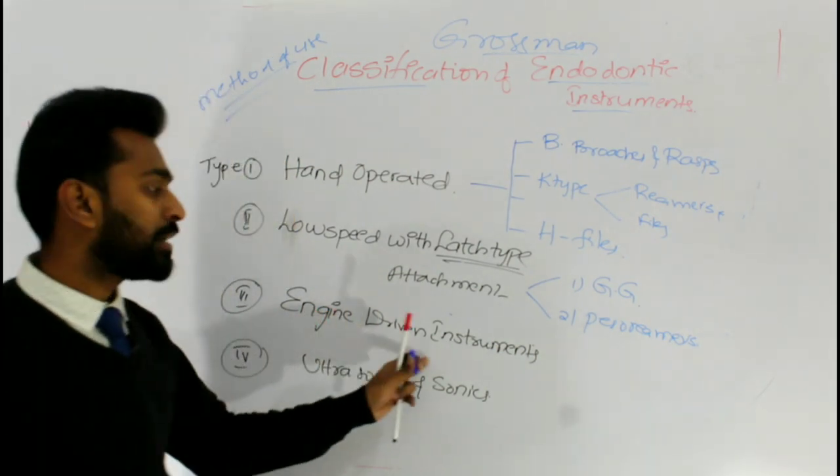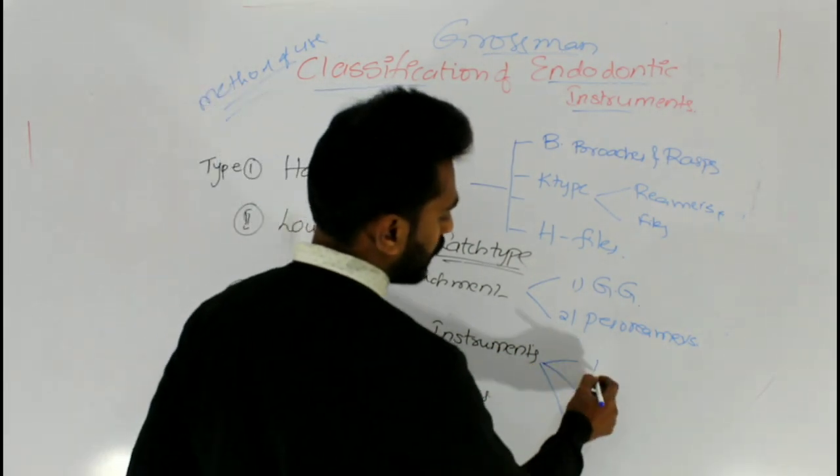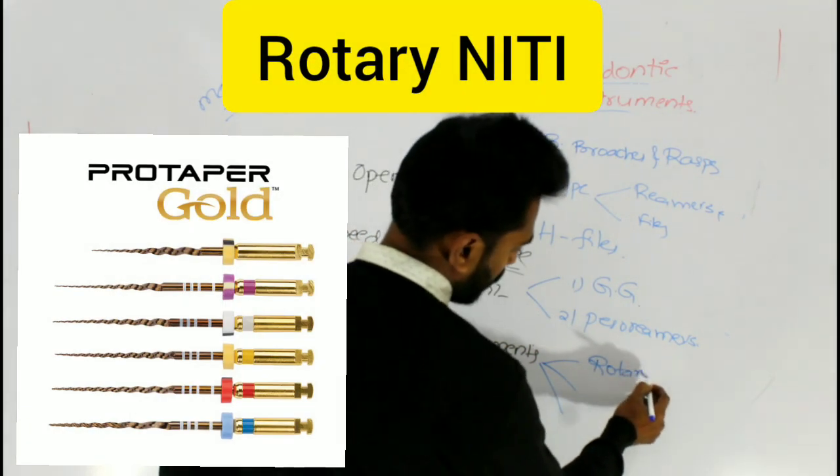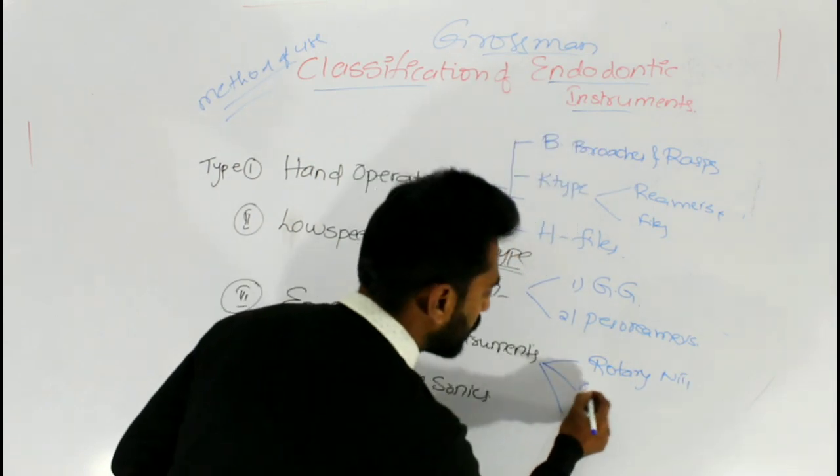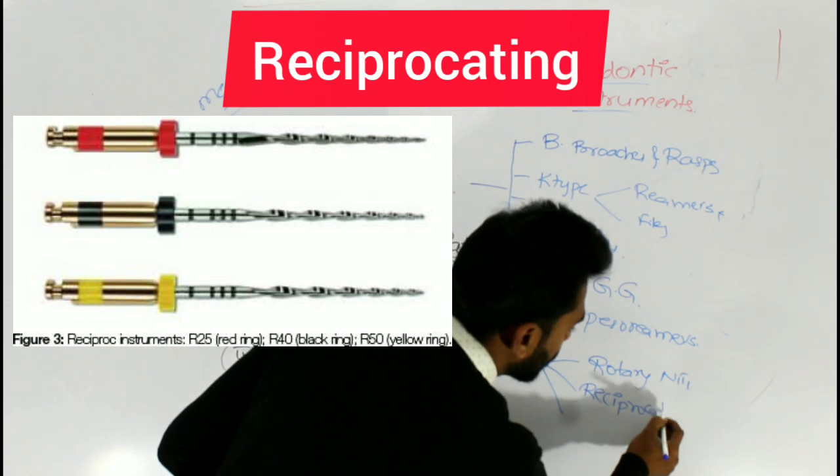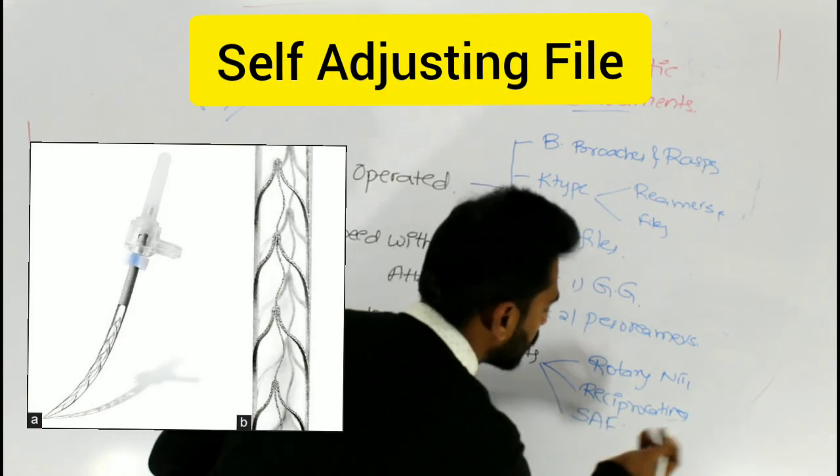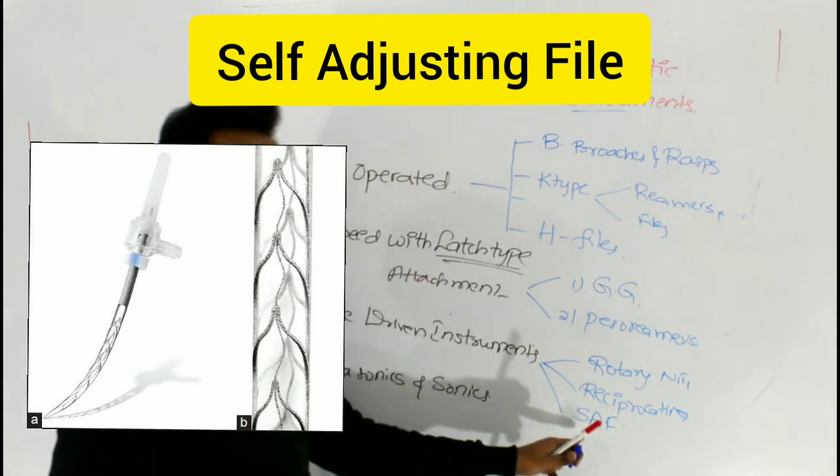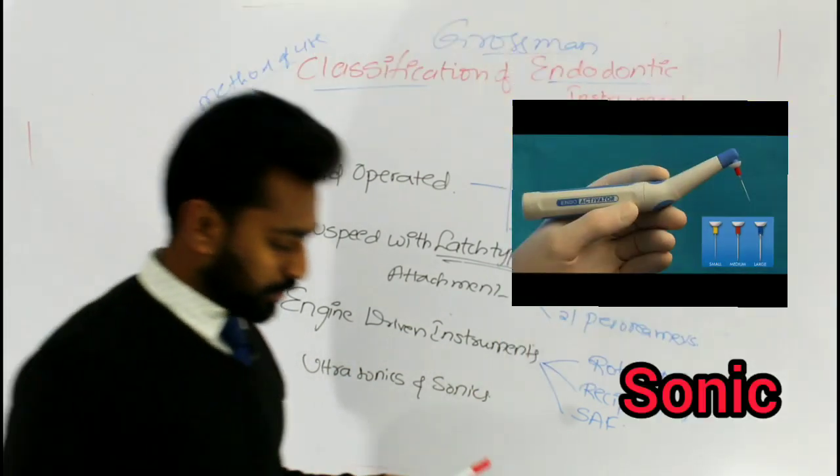Coming to the engine-driven instruments, these are classified into three categories: rotary NiTi instruments, reciprocating instruments, and SAF, which means self-adjusting file. And the final is ultrasonic and sonic.